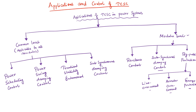Some control actions overlap between levels — subsynchronous damping control is common to both common and modular level. The reactance control is essentially required for all the common level controls like power scheduling, power swing damping, and transient stability enhancement. I will start with power scheduling control.